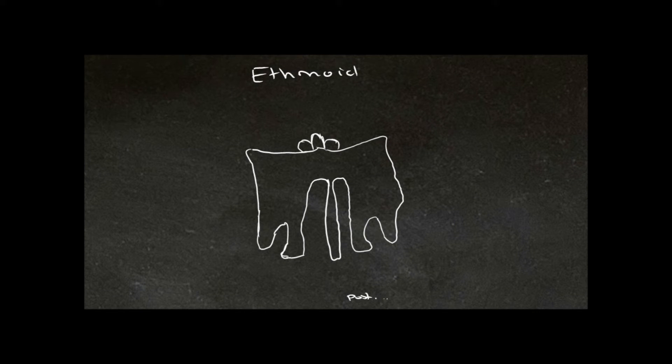Here we're looking at the posterior aspect of the ethmoid bone. First we need to orientate ourselves, and we do this by looking at some features. Here is what's known as the Crista Galli, and this is where the Falx cerebri attaches.